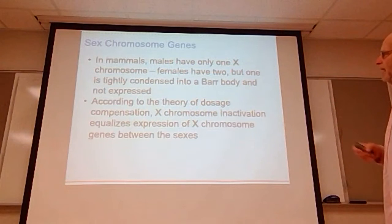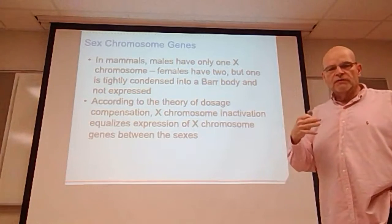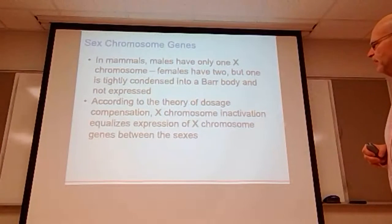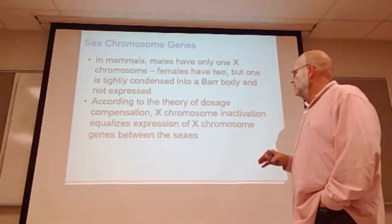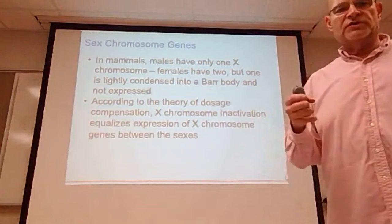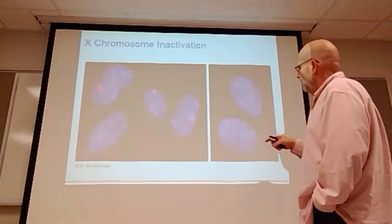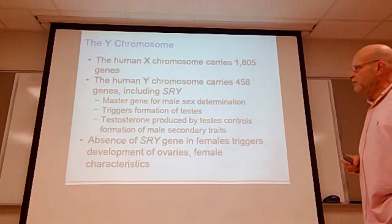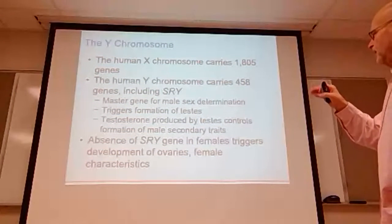In mammals, males have only one X chromosome; females have two, but one is tightly condensed into what is called a bar body and not expressed. All female sex characteristics are controlled by one X chromosome according to the theory of dosage compensation. X chromosome inactivation equalizes expression of X chromosomes between sexes.